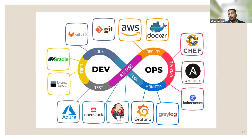The key benefits of SRE to organizations are: improved reliability of products and services, faster time to market, enhanced scalability, improved cost efficiency, and better risk management. Organizations implementing SRE span many domains — Netflix, Amazon, Airbnb, and many others including universities, retailers, manufacturers, and web pioneers. SRE has huge scope in the market, and there is a large and growing demand for SRE roles as organizations understand its importance in transforming their operations.